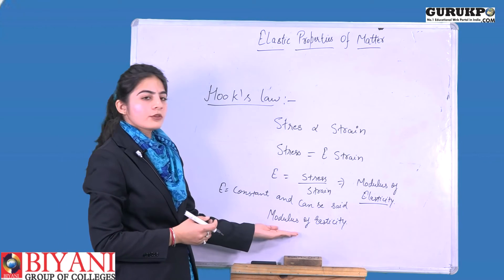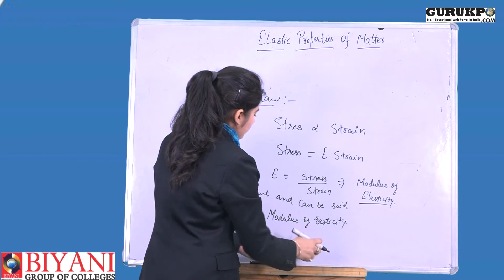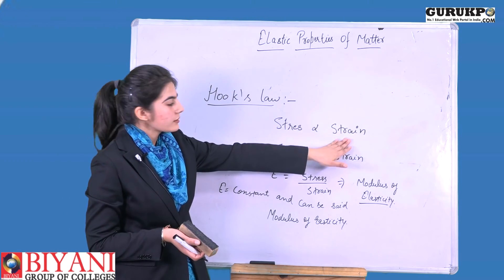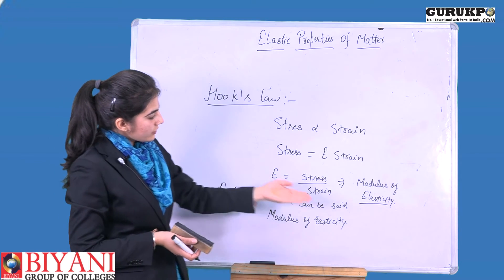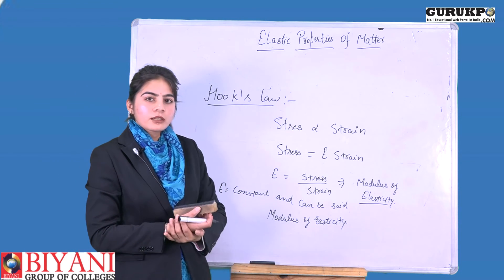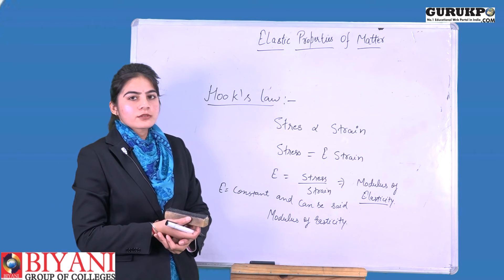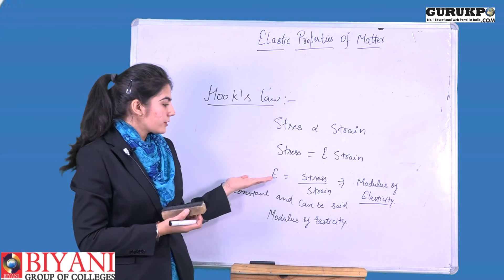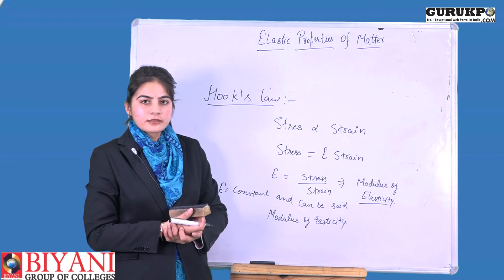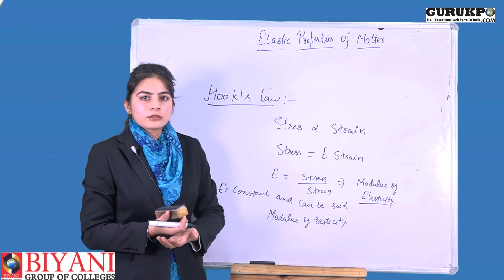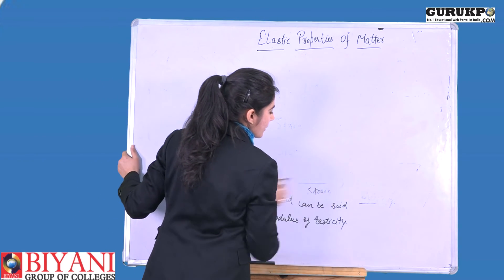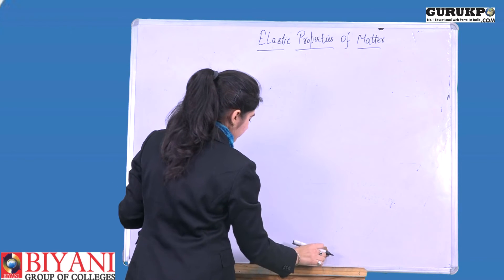This modulus of elasticity also has three parts, because stress and strain each have three parts. So the modulus of elasticity can be of three types: first is Young's modulus of elasticity, second is bulk modulus of elasticity, and third is modulus of rigidity. Young's modulus refers to change in length, bulk modulus is with respect to change in volume, and modulus of rigidity represents shearing stress or strain.